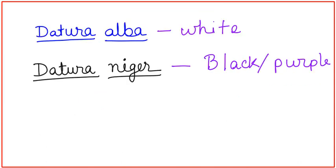Two species of Dhatura are commonly found in Bangladesh. One is Dhatura alba whose flower is white in color, so known as safed Dhatura, and another is Dhatura niger whose flower is black or purple, so known as kala Dhatura.